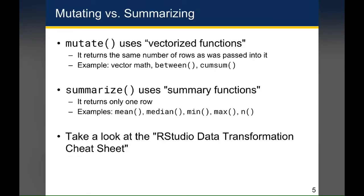You may recall from the last class that the key difference between mutate and summarize is that mutate returns the same number of rows as was passed into it, whereas summarize returns only one row. An example of functions that work with mutate include things like basic math, where you're adding multiple columns to do a calculation such that the new column has the same number of rows as the original dataset.